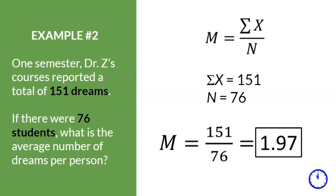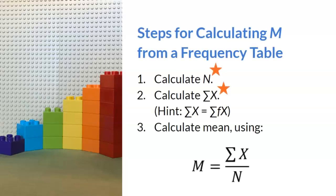Now, let's take this up a notch. These are the steps to calculate sample mean from a frequency table. It is important to note the orange stars. They are there to remind you that you need to know how to determine N and sum of X from a frequency table.